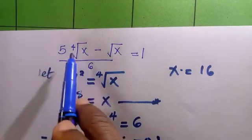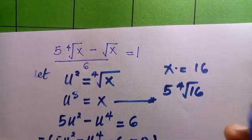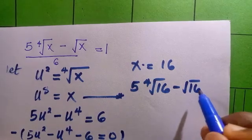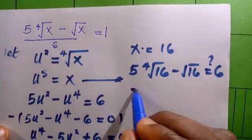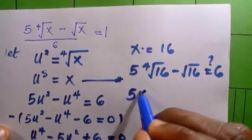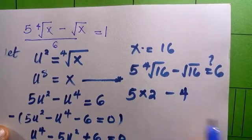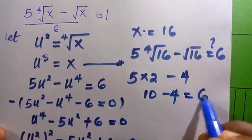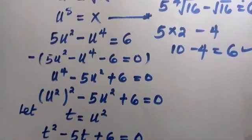For x equals 16: five times the fourth root of 16, minus the square root of 16, divided by six. The fourth root of 16 is two, and the square root of 16 is four. So we get five times two minus four equals ten minus four equals six. This confirms x equals 16 is also a valid solution.